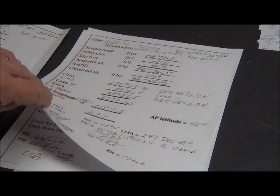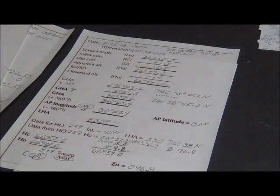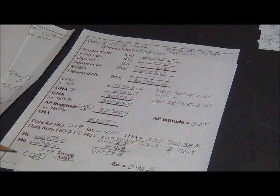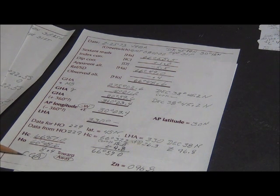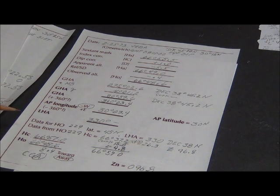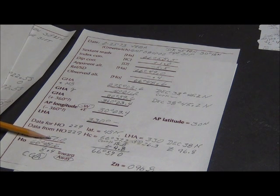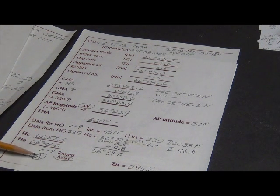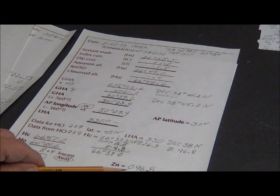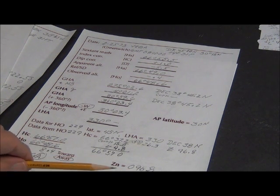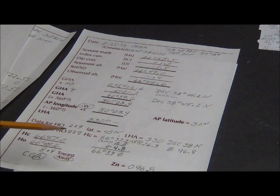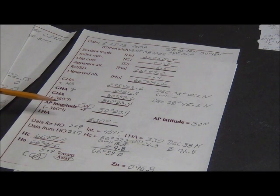The same thing applies with another site form we filled out, Vega. Now in this case, here again, Coast Guard Academy, computer, greater, or away. Computer is greater, so it's away from the bearing of 096.8 from the assumed position.